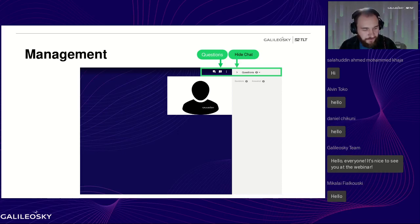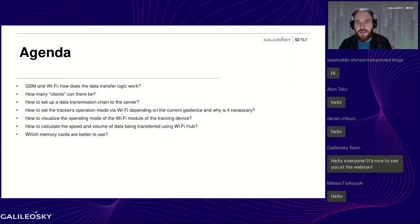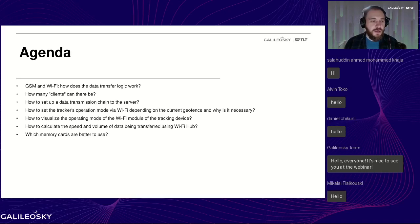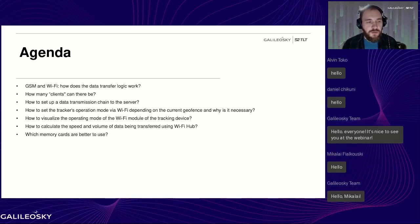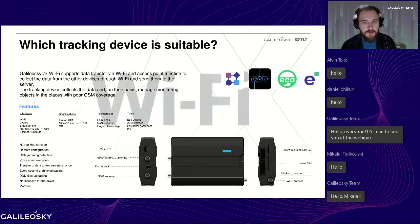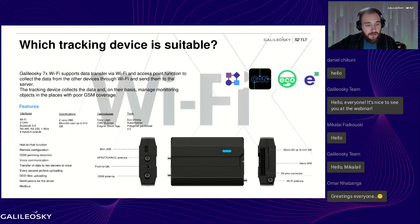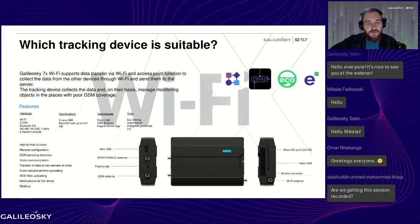Galileo Sky devices — at least some of them — are equipped with a Wi-Fi communication channel. This means they can work not only via GSM but also via Wi-Fi, which gives us some interesting opportunities. Here is the device that allows us to work in areas with no GSM coverage: this is the Galileo Sky 7x Wi-Fi Hub. It's the same 7x device you're all familiar with — same features and interfaces — but also equipped with a Wi-Fi module.